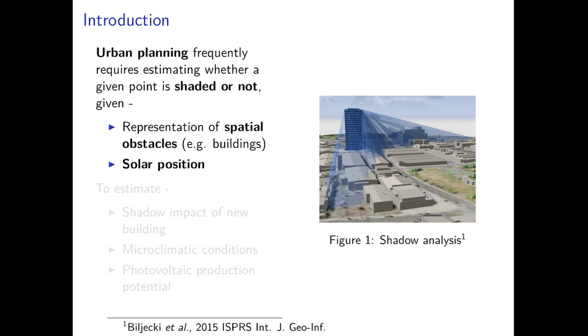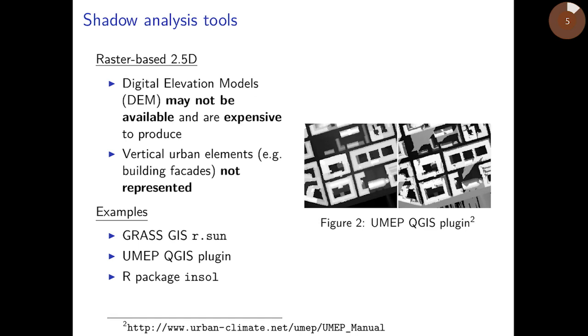In the field of urban planning, it is frequently required to estimate whether a given point is shaded or not, given a representation of obstacles such as buildings and sun position. For example, it may be interesting to evaluate the shadow impact of a new building, microclimatic conditions, or photovoltaic electricity production potential.